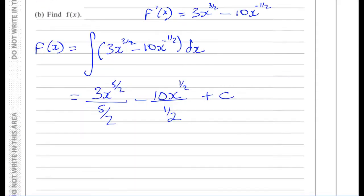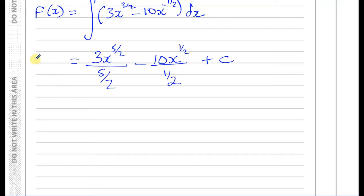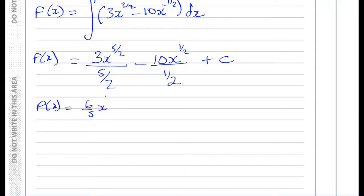So f(x) equals... Dividing by a fraction is the same as multiplying by its reciprocal. So 3 divided by 5 over 2 gives 6 fifths, and 10 divided by a half is 10 times 2 equals 20. Therefore f(x) equals 6 over 5 times x to the power of 5 over 2, minus 20x to the power of a half, plus c.